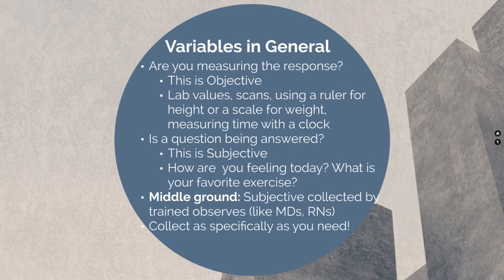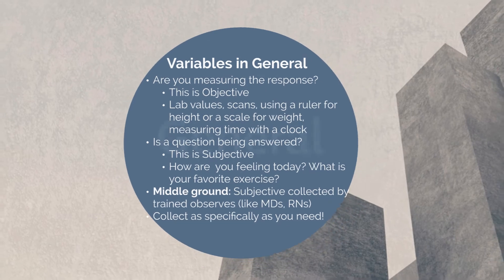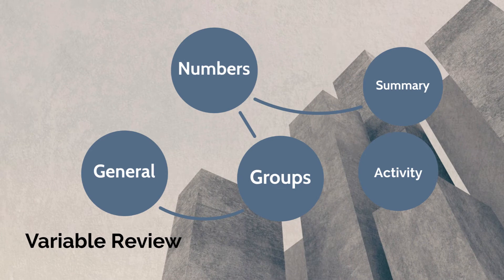There is a middle ground where trained observers are collecting things like reflexes, muscle strength, or doing an eye exam — they are trained to give objective measures. Collect your data as specifically as you need, numerically and in an objective way if possible. We have two types of variables: categorical and numeric.